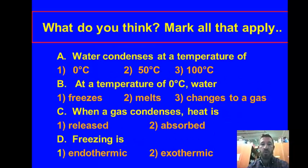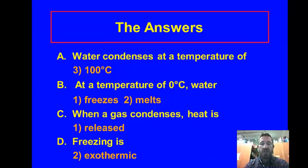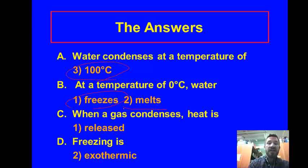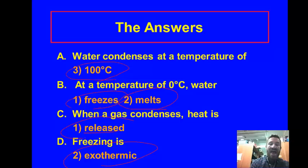Let's do some questions. Water condenses at a temperature of? At a temperature of zero degrees Celsius, water will do what? When water condenses, heat is? And freezing is what? Answers: water condenses at 100 degrees Celsius. At zero degrees Celsius, water not only freezes but also melts. When water condenses, heat is released. And freezing is an exothermic process.